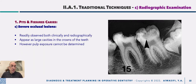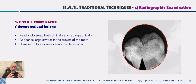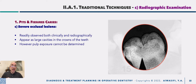In severe occlusal lesions, you will observe both clinically by visual examination and radiographically a large cavity in the tooth and a large radiolucency. This may suggest pulp involvement, but there is still a slight error in angulation that means radiographs cannot definitively confirm whether the pulp is exposed — it is conclusive but not decisive regarding pulpal involvement.